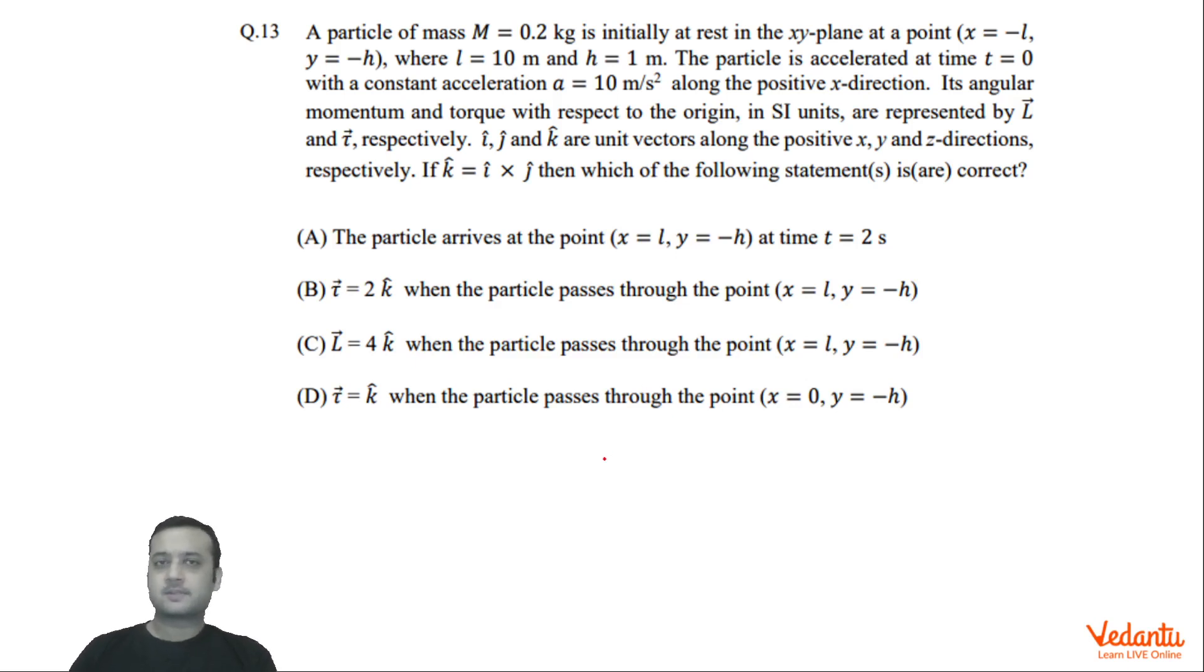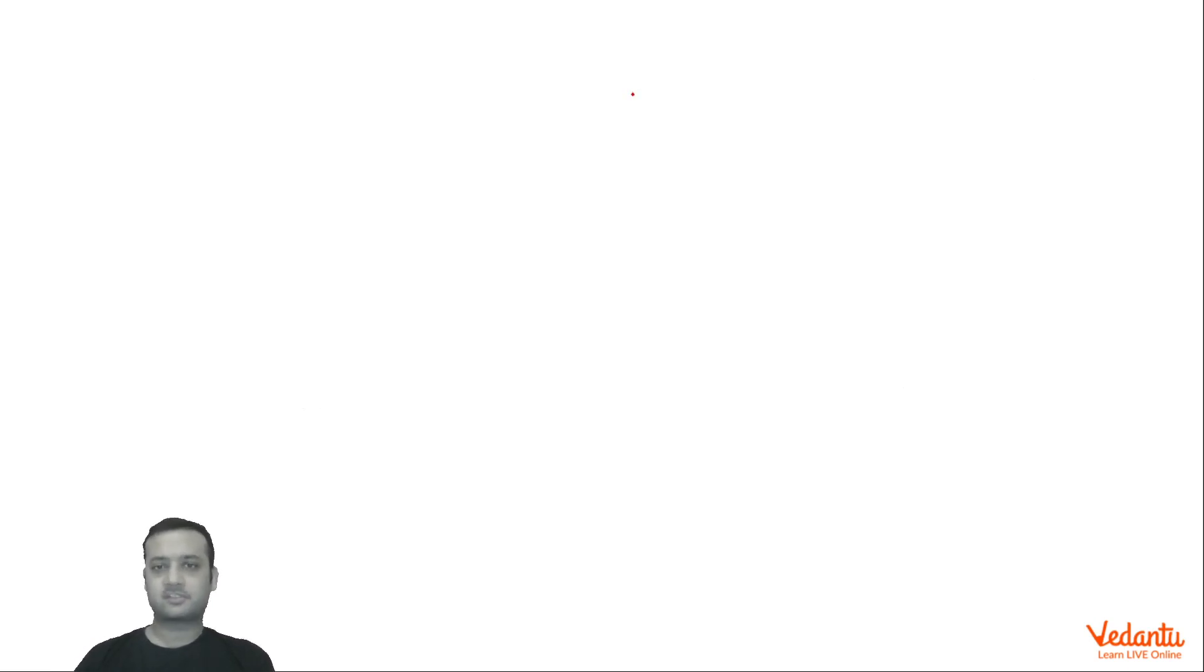This was based on multiple choice correct question with partial marking. So let's see what's happening here. A particle is 0.2 kg, initially it is located at -10, -1, so the situation we draw. This point has coordinates -10, -1.